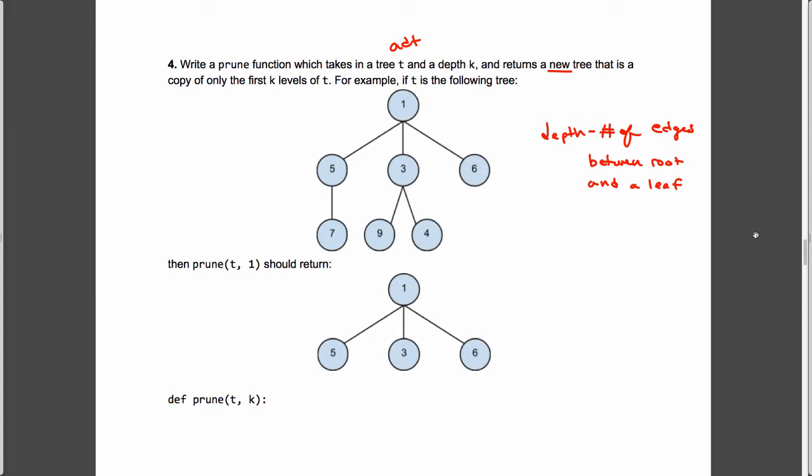Alright, so if I'm looking at something that's a depth of 1, and I pass in this tree right here, well, the root is at depth 0, and all of my sub-trees, all of my sub-nodes now, are at depth 1. But when I go down one more level, these are all at depth 2, and so we should cut them off.